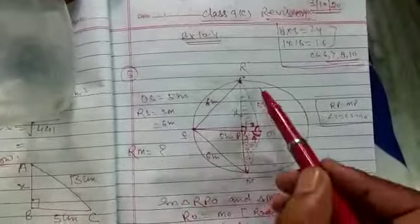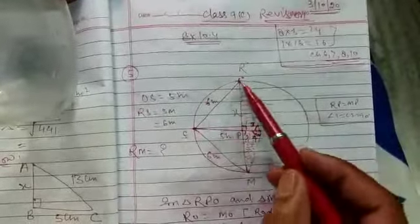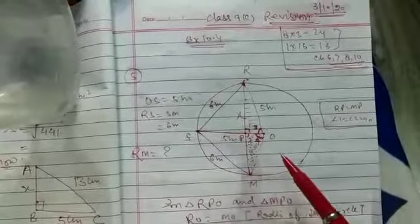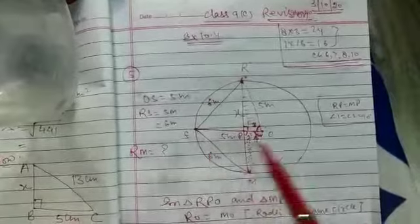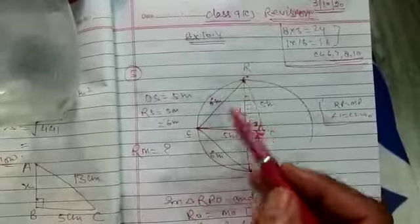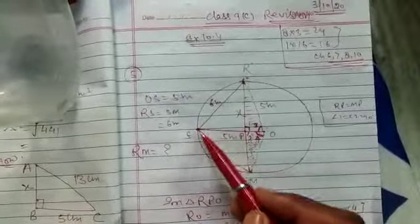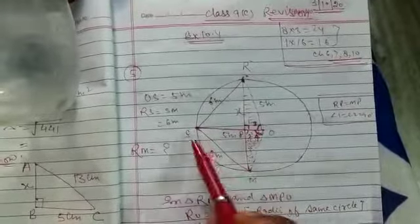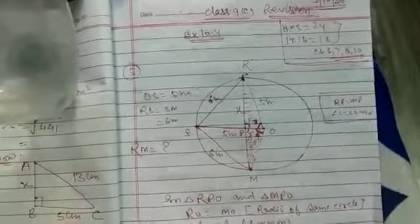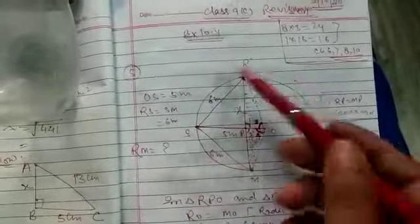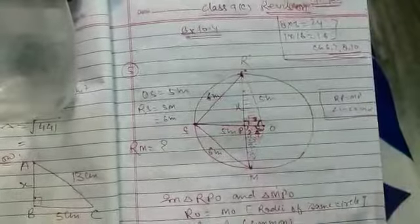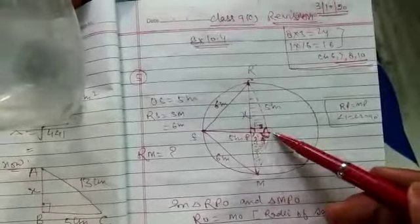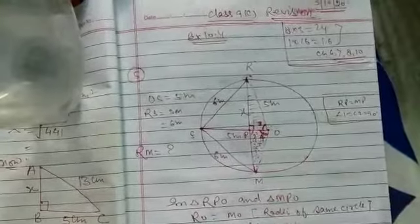तो देखिए, इस तरह से कोई circular park है, यहां पर Reshma, Salma और Mandip 3 girls हैं जो एक दूसरे को ball फेंक रहे हैं। Reshma और Salma के बीच की distance 6 meter है, Salma और Mandip के बीच की भी 6 meter है, और circle की radius 5 meter है। तो हमने इस तरह से figure बना लिया — R से O को और O से M को join कर लिया।